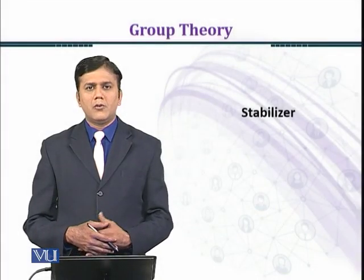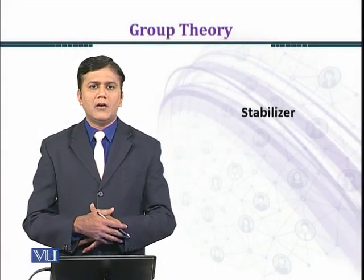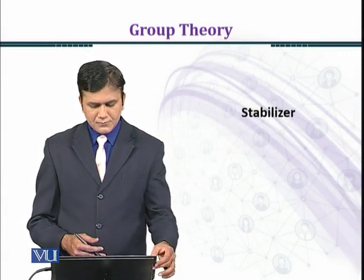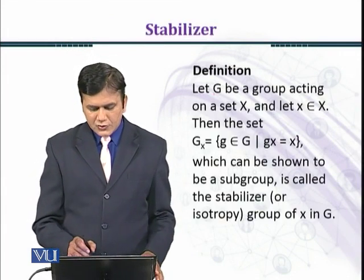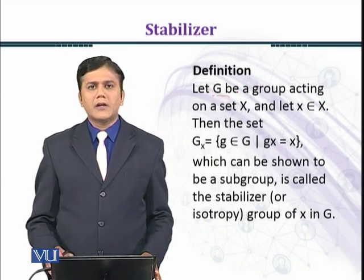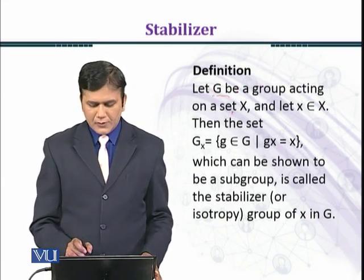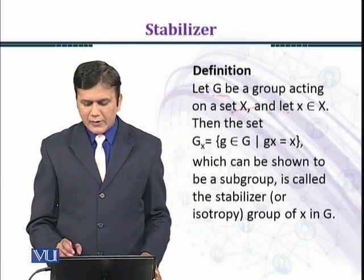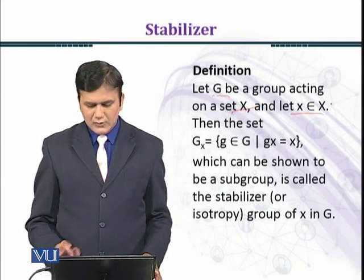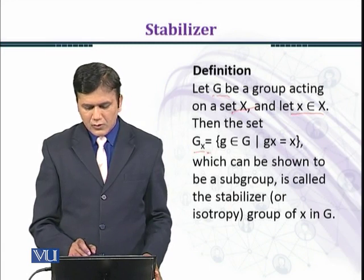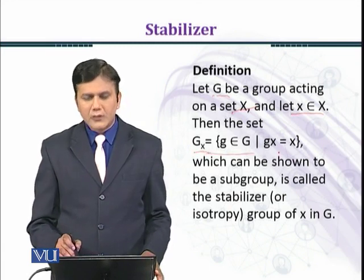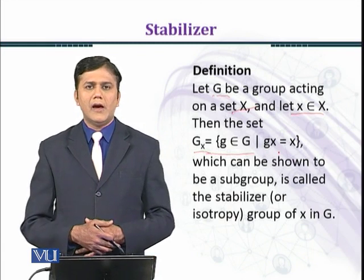In this module we shall introduce a stabilizer definition. Let G be a group acting on a set capital X, and let x belongs to capital X. Then the set G_x equals g belonging to G such that gx equals x.